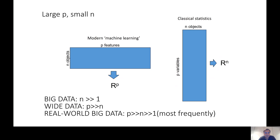In terms of notation: big data means having many objects to analyze — a big number of objects, not necessarily a big number of features. Wide data is when the number of features is much bigger than the number of objects, and you have a substantial number of objects. This is a general characteristic of modern datasets.